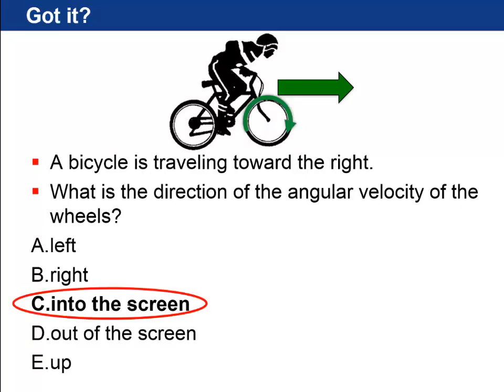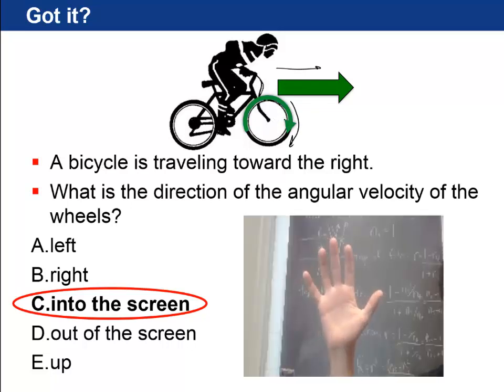Okay, so the answer was C, into the screen. You can see there that if the bicycle is moving towards the right, the wheels must be moving clockwise. So here's my right hand, and if I bend my fingers naturally, oh, that's the wrong way. So that's going to be counterclockwise, right? So how do I do this? I guess the only way I can do this is turn my hand right around. There we go. That's right. So now, if you look at my thumb, it's pointing away from you. So that would be into the screen that you're looking at right now. So C, into the screen.